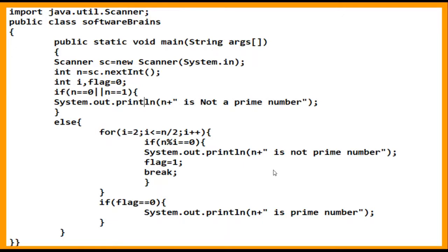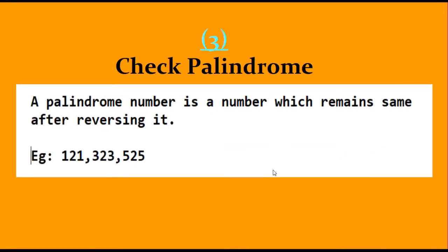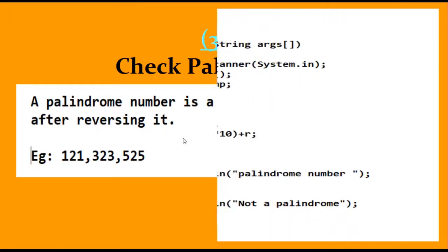The next program is palindrome check. This covers two logics: finding the reverse of a number and checking if it is a palindrome. A palindrome is a number where the reverse equals the original. For example, 121 reversed is still 121, so it is a palindrome. Other examples include 323 and 525.